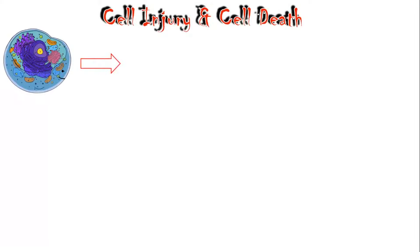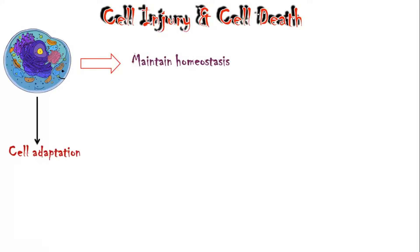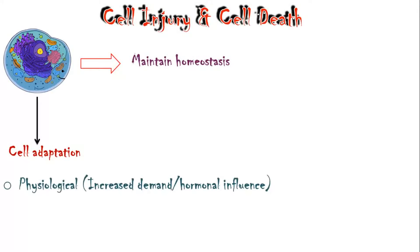The ultimate goal of every cell in our body is to maintain homeostasis. However, in certain situations, due to changes in their microenvironment, cells undergo structural and functional changes, known as cell adaptation. These microenvironmental changes could be physiological, such as increased demand and hormonal influence.